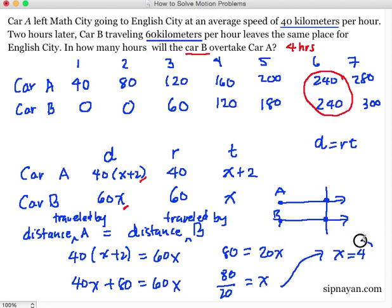Which is the same as our answer here. So 4 hours after 4 hours, ma-overtake ng Car B yung Car A because they have, at 4 hours, they have the same distance traveled. Maraming salamat and I hope naintindihan nyo ating tutorial. Maraming salamat and see you in the next tutorial.